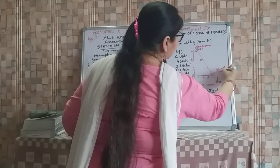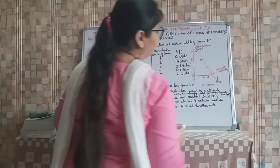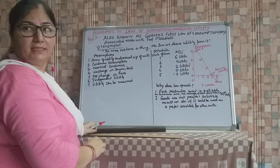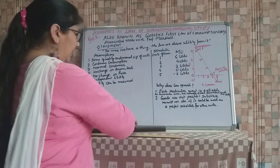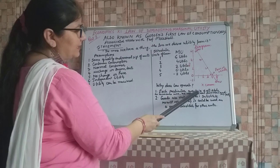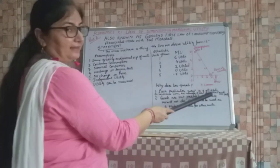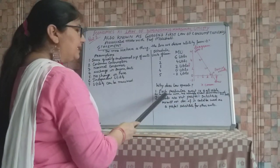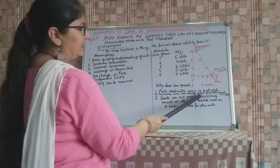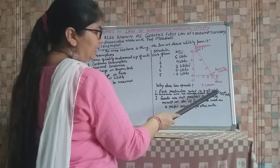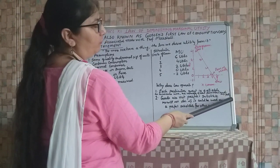Means the maximum satisfaction is being derived by the consumer. Why does the law operate? Now each particular want is satiable means that can be satisfied. As he consumes more his intensity of want diminishes and MU falls.